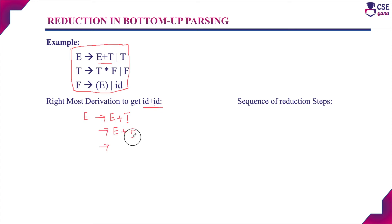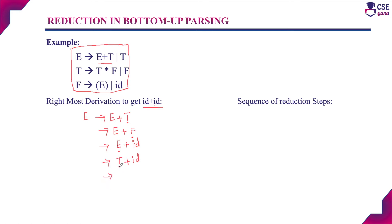For the rightmost non-terminal F, we apply the production rule F derives id. Here only one non-terminal remains, so we apply E derives T, then T derives F, and finally F derives id. We have now derived the input string id plus id using rightmost derivation.